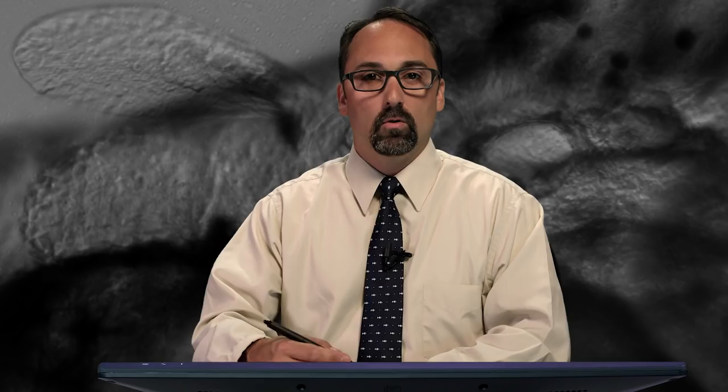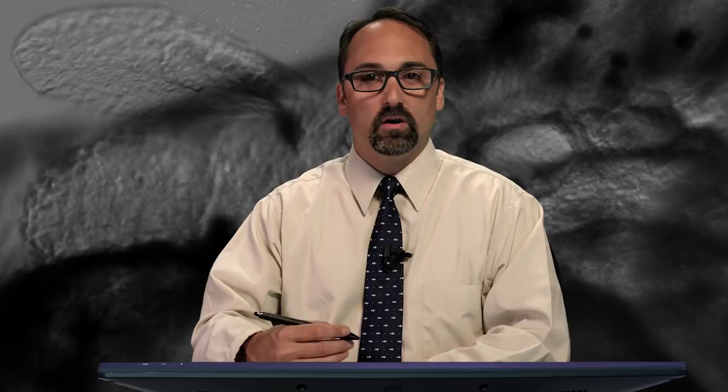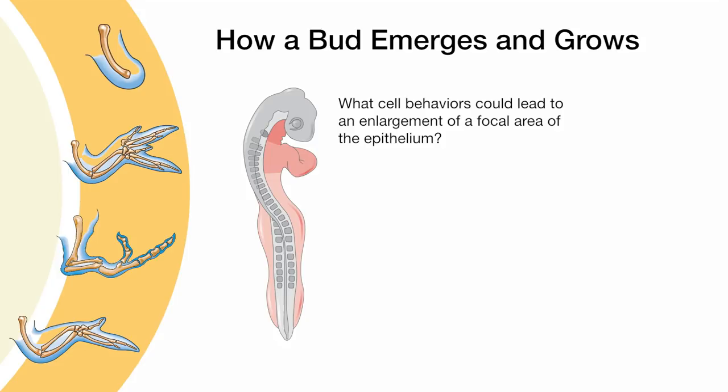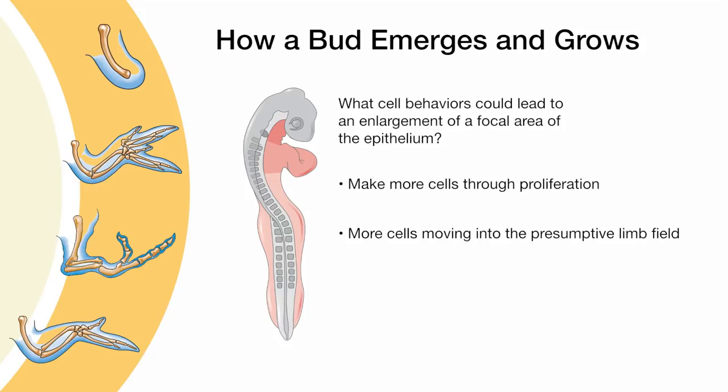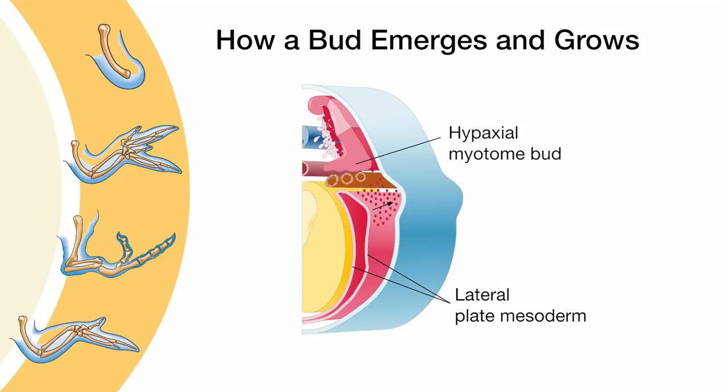What needs to happen for this bud to emerge and grow? What sorts of cell behaviors would lead to an enlargement of the focal area of the epithelium? If you contemplated making more cells through proliferation, then you're right. If you thought of more cells moving into the presumptive limb field, then you are also right. Mesenchymal cells from the lateral plate mesoderm and from the hypaxial myotome actively migrate toward the limb field to create a heterogeneous mass of proliferative bone and muscle progenitor cells.